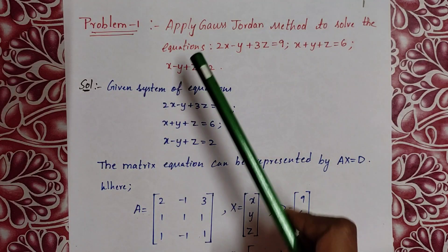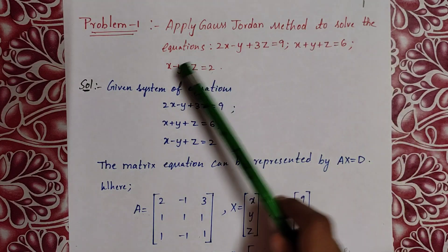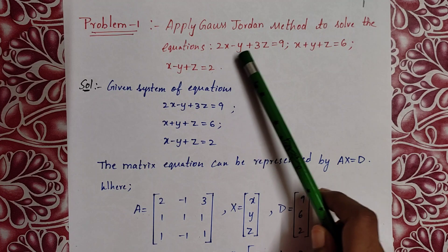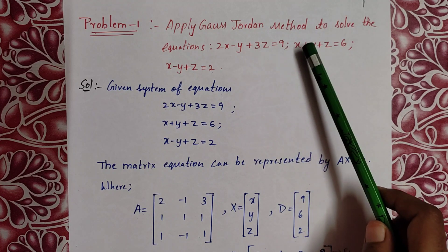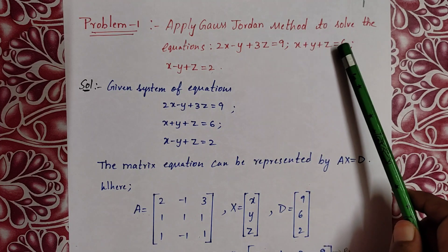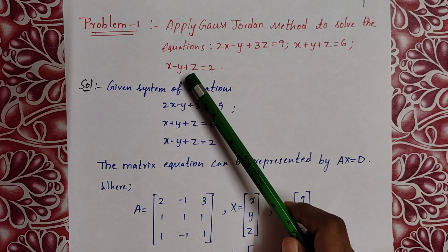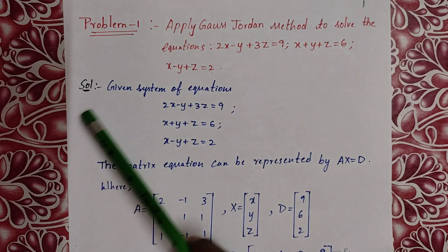Problem 1. Apply the Gauss-Jordan method to solve the equations: 2x minus y plus 3z equals 9; x plus y plus z equals 6; x minus y plus z equals 2.